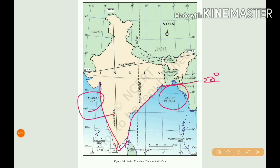The total length from Jammu and Kashmir to Kanyakumari is 3,214 kilometers, and from Gujarat to Arunachal Pradesh is 2,933 kilometers. The east-west extent from Gujarat to Arunachal Pradesh is smaller than the north-south extent, and there is a time difference of 2 hours between these two extremes.